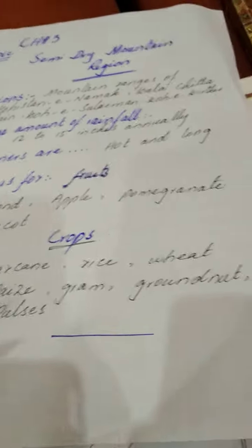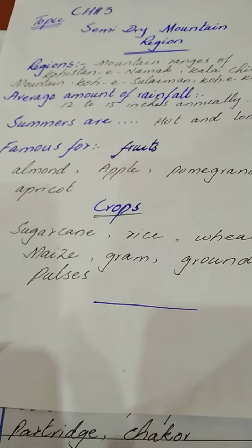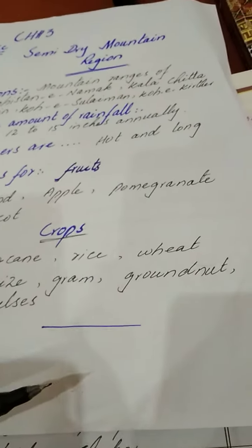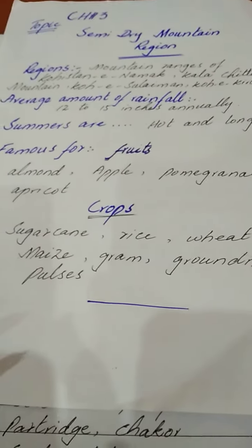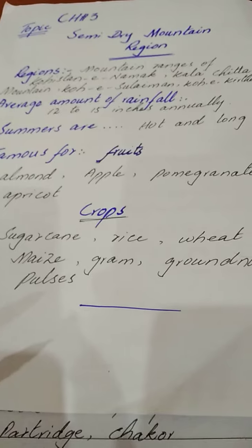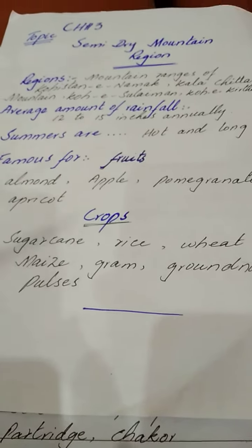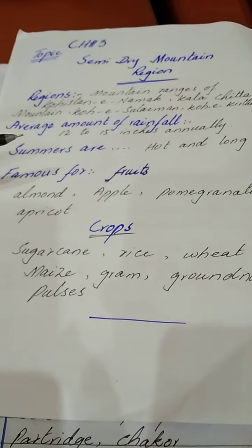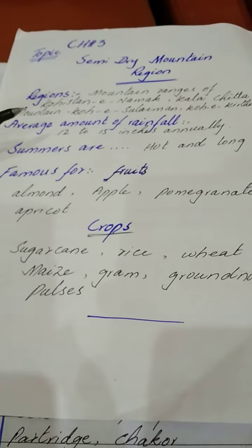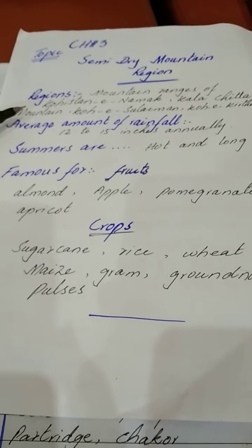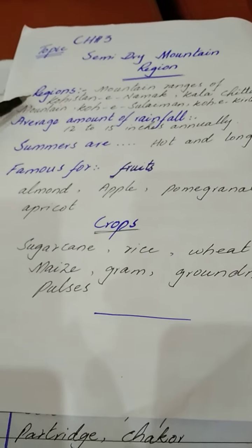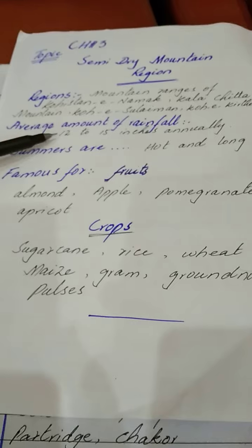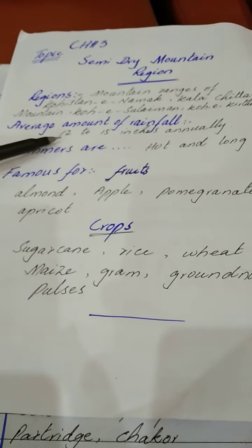The important crops of this region include sugarcane, rice, wheat, maize, gram, groundnut, and pulses. These are all the important crops of the semi-dry mountainous regions.